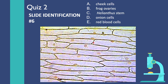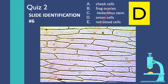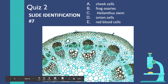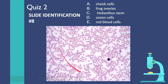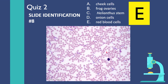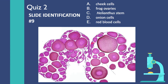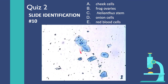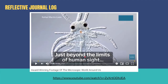Let's try to identify the following slides based on the examples we've seen. Letter D shows onion cells with cell wall and nucleus. This is a cross-section of a Helianthus stem. This image shows red blood cells as seen in a blood smear. These are frog ovaries — amazing. These are cheek cells, the lining inside your mouth. For your reflective journal log, I recommend watching the video entitled 'Award-winning footage of the microscopic world around us,' which will help you appreciate the different specimens seen using different types of microscopes. Link in the description below.